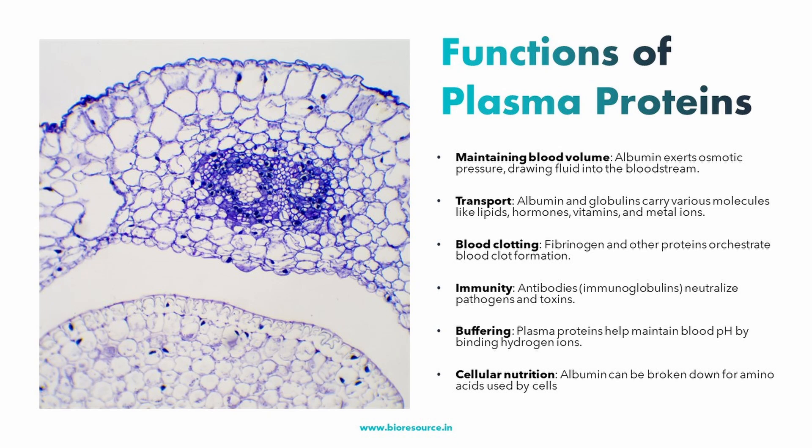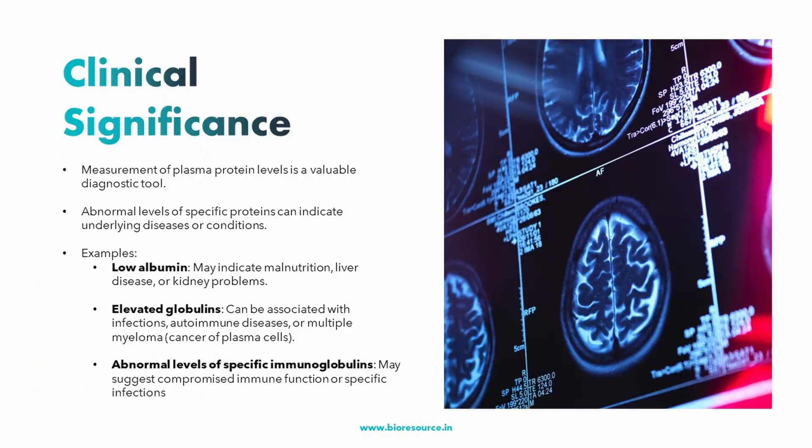Plasma proteins also play a key role in cellular nutrition. In extreme situations like starvation, albumin can be broken down into amino acids — the building blocks of proteins. These amino acids can then be used by the cells for energy or to synthesize new proteins essential for survival.